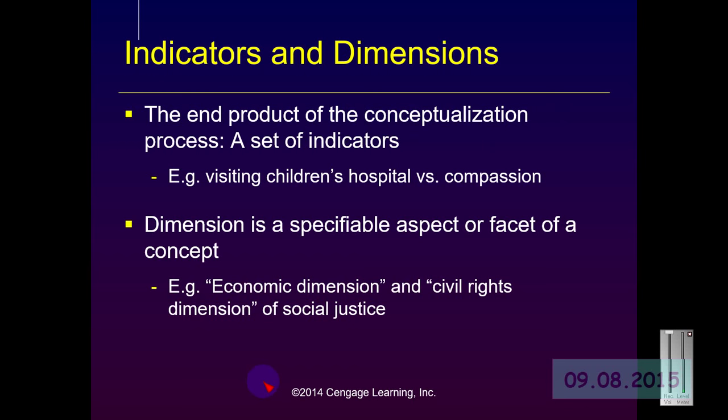It is important to think about indicators and dimensions, especially when creating scales to measure concepts that are not easily observed. For example, compassion is not something you can put on a scale and measure directly, but most of us know it when we see it. So we define its indicators — visiting children in the hospital, being kind to animals, helping elderly or infirm people. A dimension, by contrast, is a facet of a concept — for example, the economic dimension of social justice, or the concept of discrimination having dimensions of race discrimination, gender discrimination, or ethnic or country-of-origin discrimination.